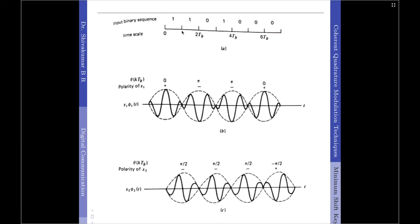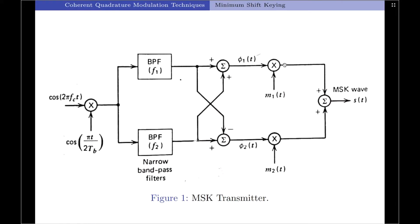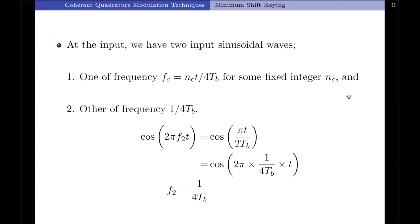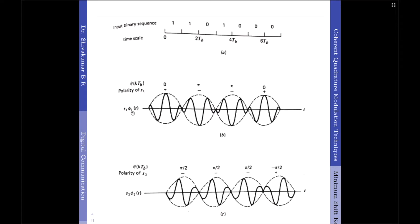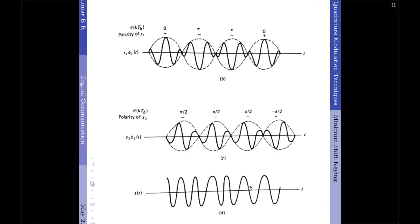The second sequence considers the odd multiples of tb. At 1·tb the phase is 0 and we have symbol 1, so the phase increments by π/2. At 3·tb it is π/2; then we have symbol 1 giving π. With symbol 0, it becomes π − π/2 = π/2. The next symbol is 1, so at that instant it becomes π. At odd multiples: 1·tb gives π/2, 3·tb gives π/2, 5·tb gives π/2, and 7·tb gives minus π/2. As per the transmitter diagram, the two signals S1·phi1(t) and S2·phi2(t) are then added to create the MSK transmitted signal.